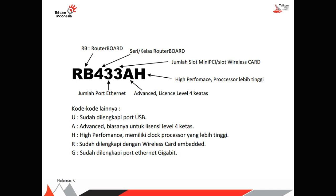Ada kode-kode lainnya selain kode di atas. Ada U, itu maksudnya adalah USB, yang sudah support dengan port USB. Ada A, sama, advanced. H, high performance, yang memiliki clock prosesor lebih tinggi. Kemudian R, itu sudah dilengkapi dengan wireless card embedded. Dan K, sudah dilengkapi dengan port ethernet gigabyte.